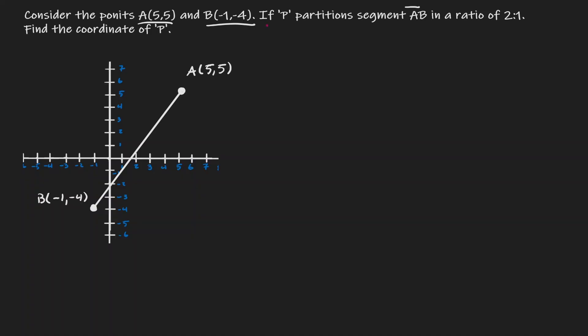What we want to do is find the location of a point — let's call it P — that will partition the line segment. Partition just means to cut. We want to find the location of a point P that will cut the line segment into a ratio of 2 to 1.